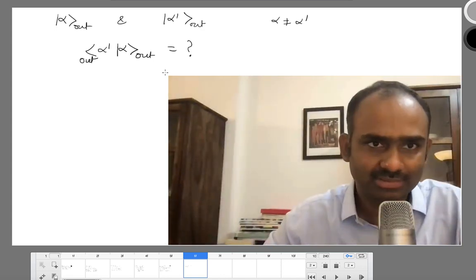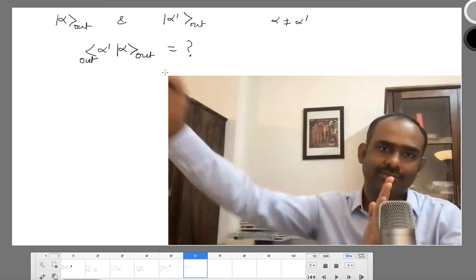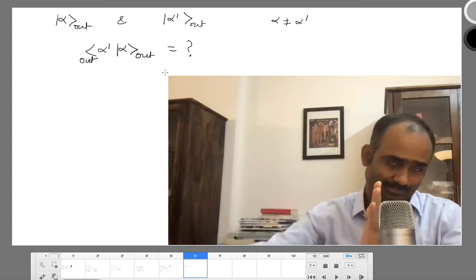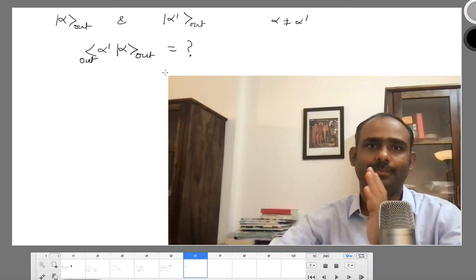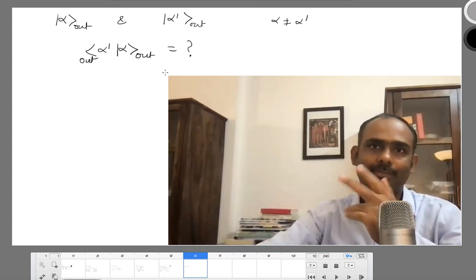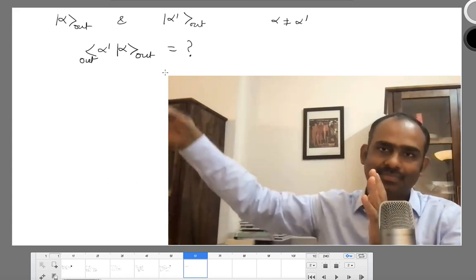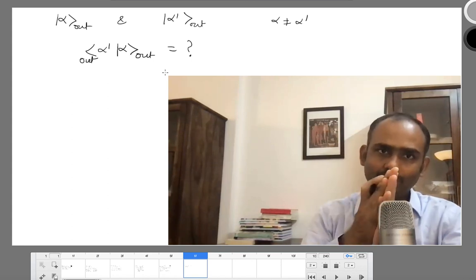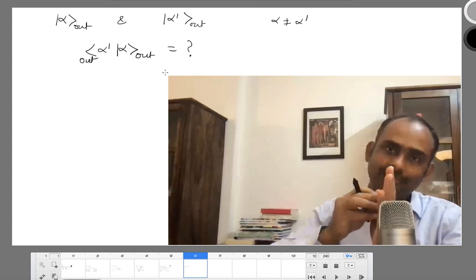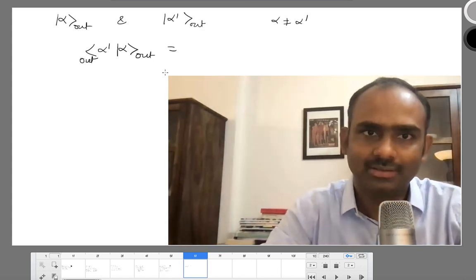It is easy to understand what this inner product is. Suppose you take a basis state at time t equal to 0 — say alpha out — and evolve it into the far future; it will correspond to a set of particles with particle content alpha. If you start with a different state alpha prime out, then in the far future the particle content will be alpha prime. Since alpha and alpha prime are not the same, these two states in the far future are different. There is no possibility of alpha out evolving into what you would get from alpha prime out, so the amplitude is 0 — they are orthogonal.